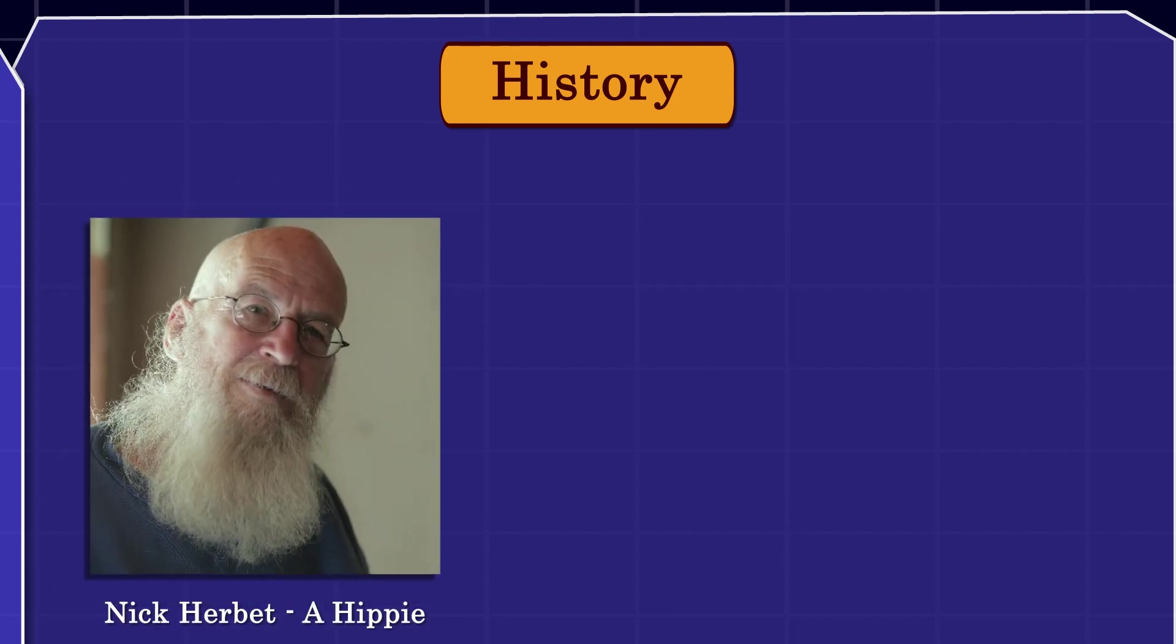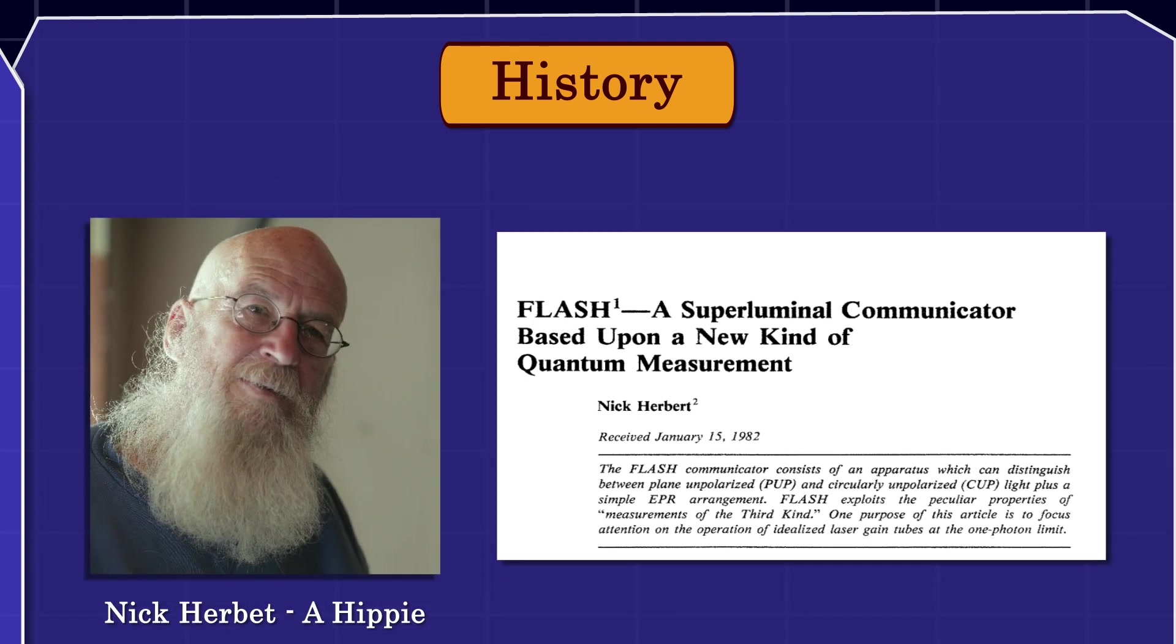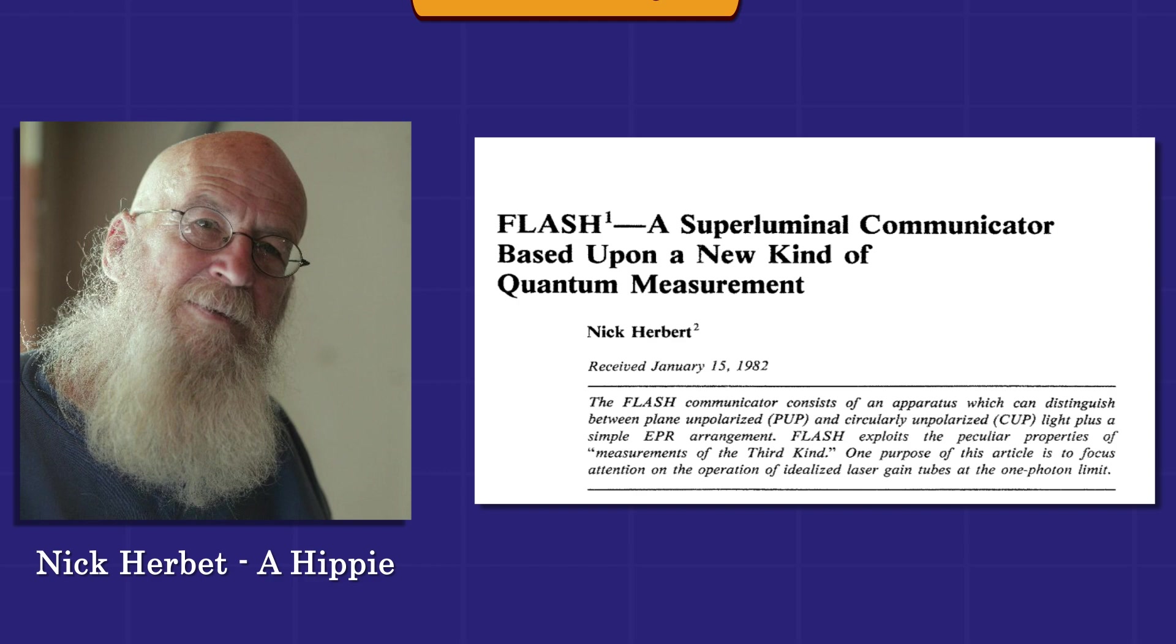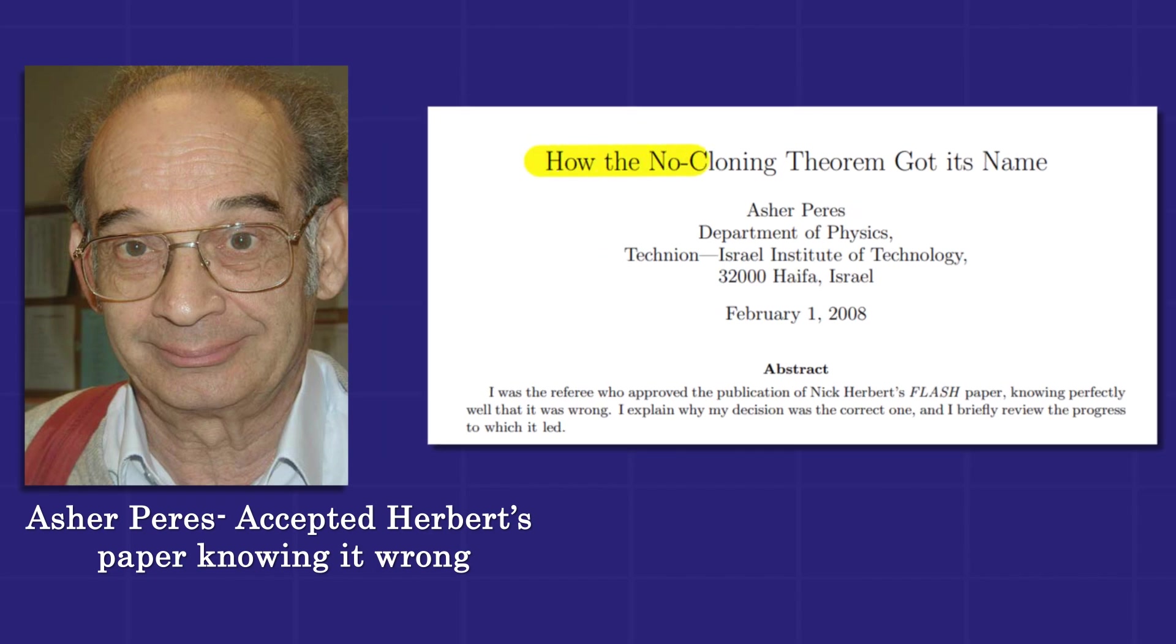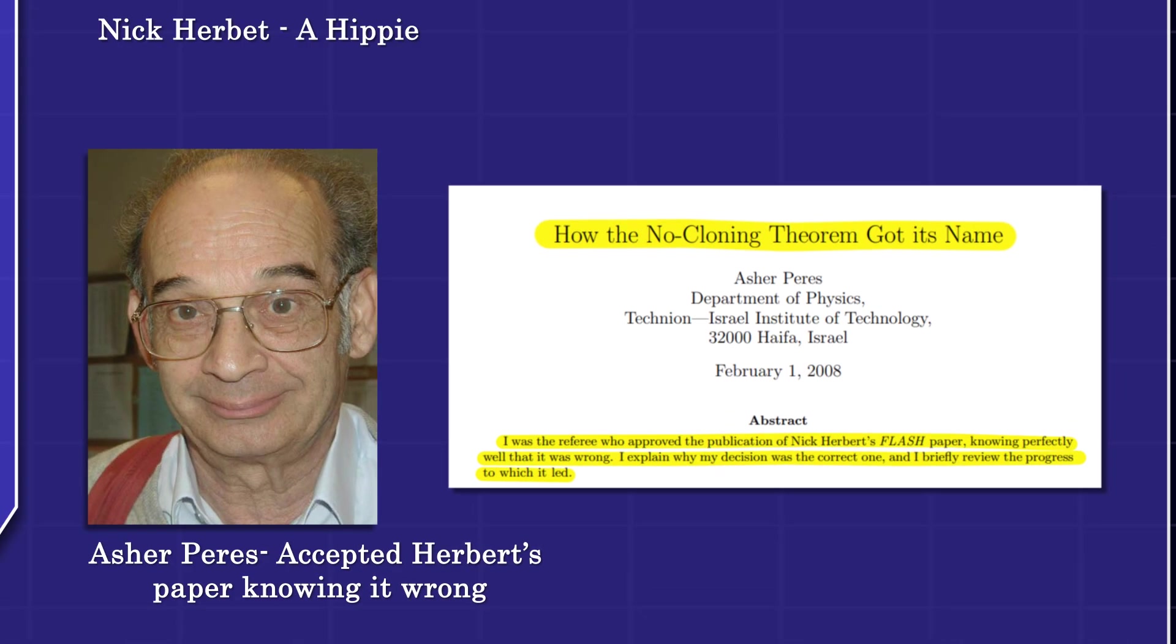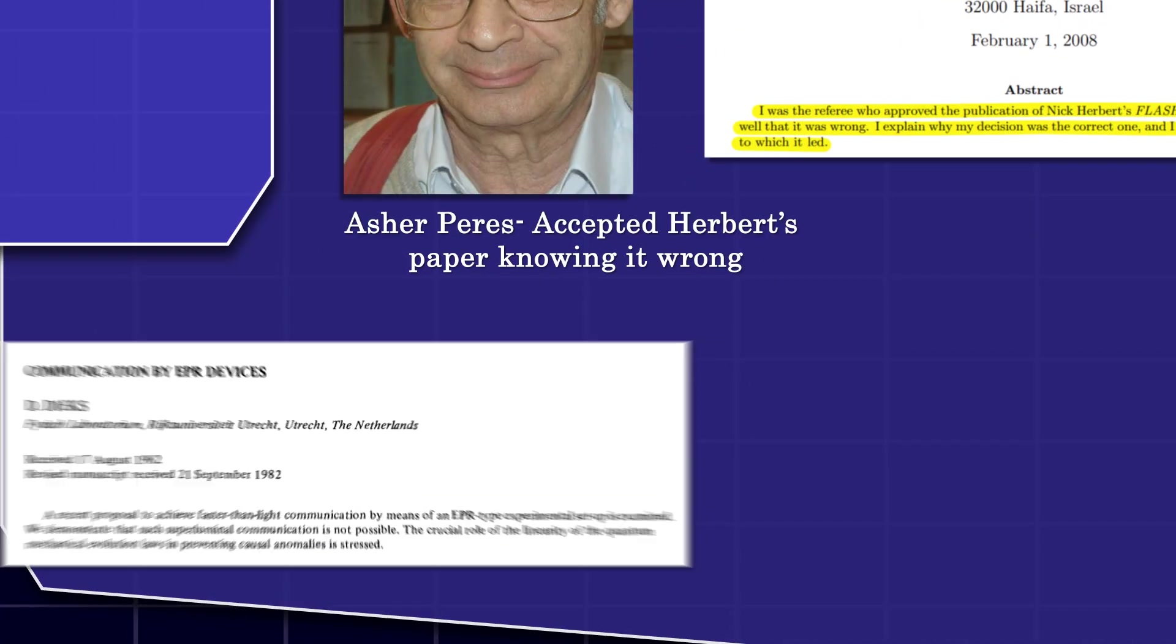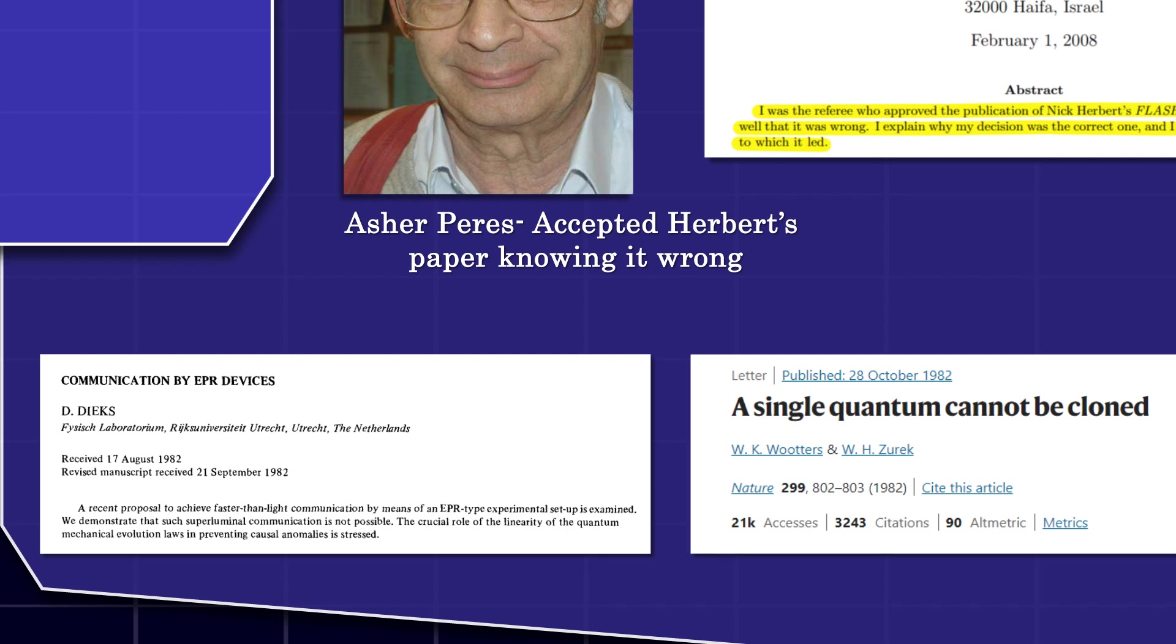Nick Herbert, a member of the Physics Hippie Group, proposed a scheme for sending signals faster than the speed of light using quantum entanglement. Asher Peres, a prominent physicist of his time, knew that the paper was wrong, but still accepted it for publication. He argued that the paper would prompt further discussion. The refutation of Herbert's ideas led to the development of the no-cloning theorem later.